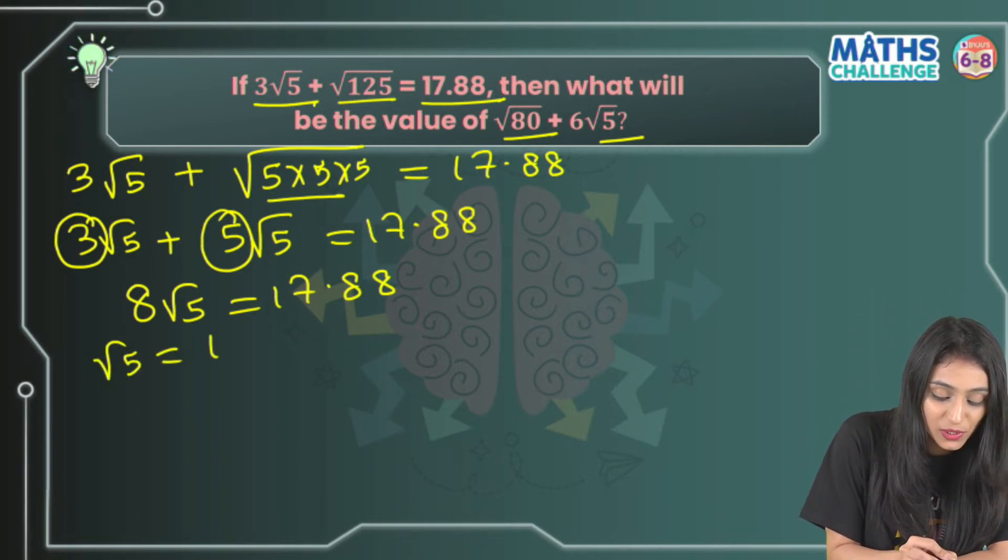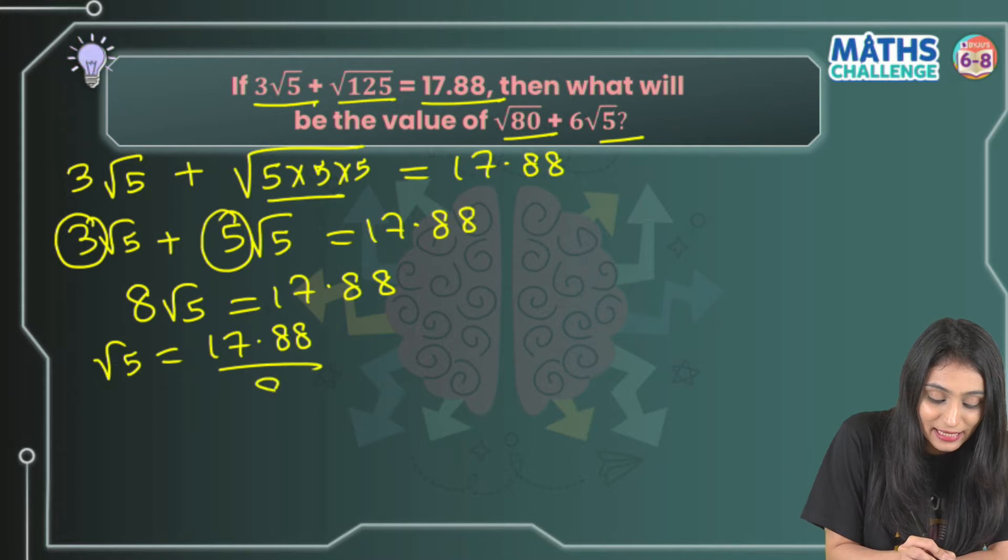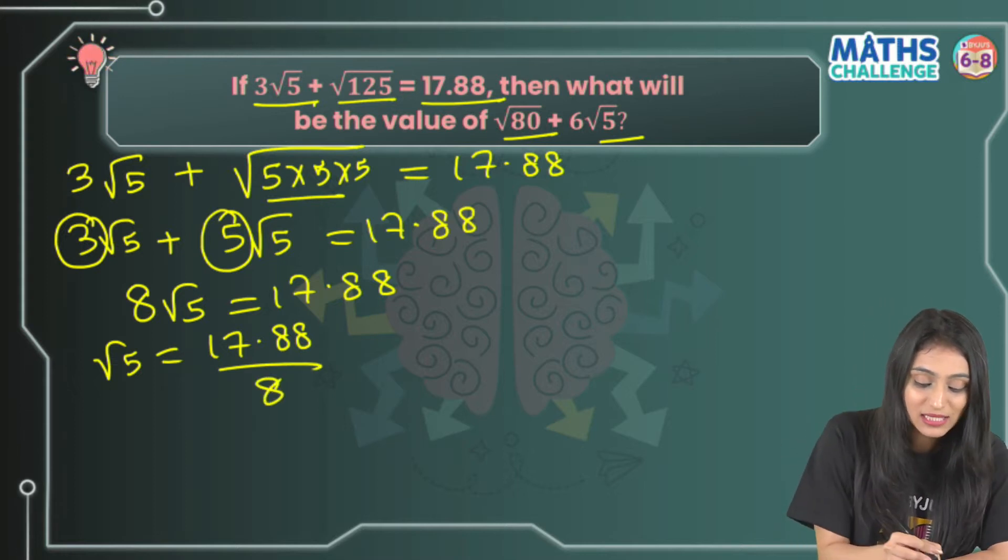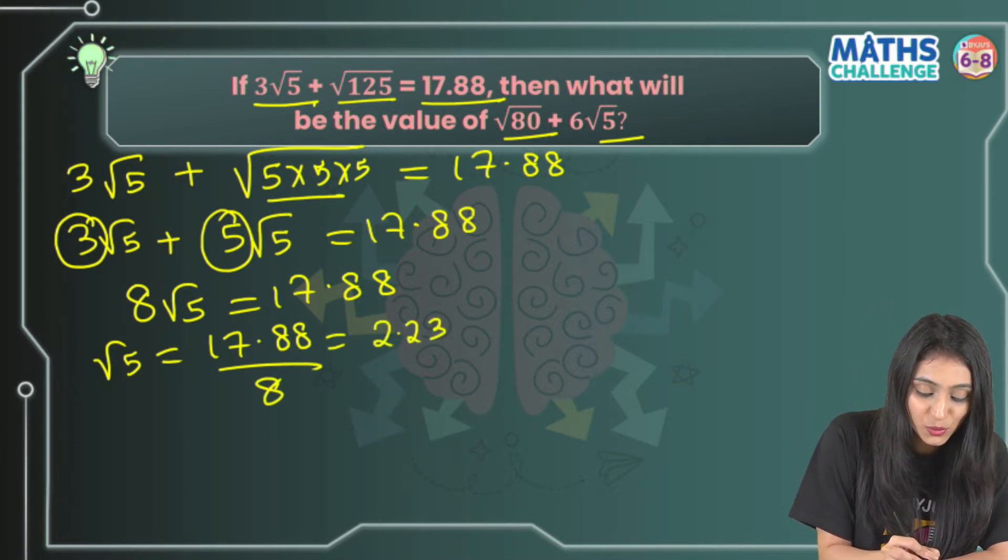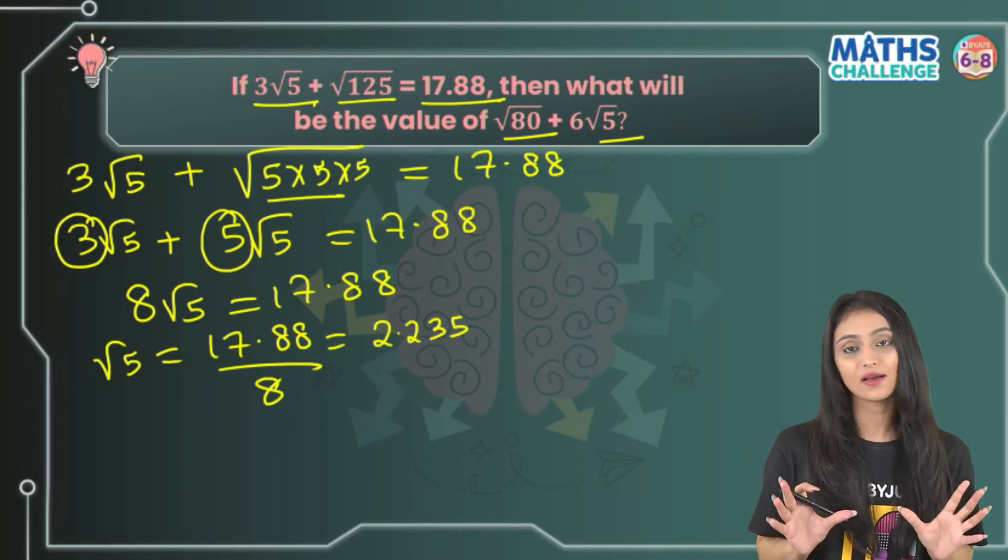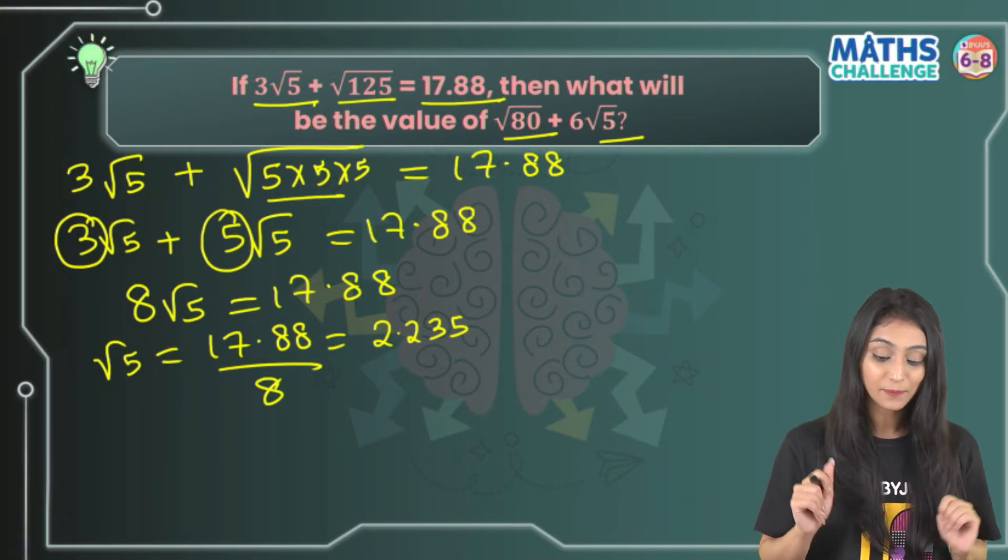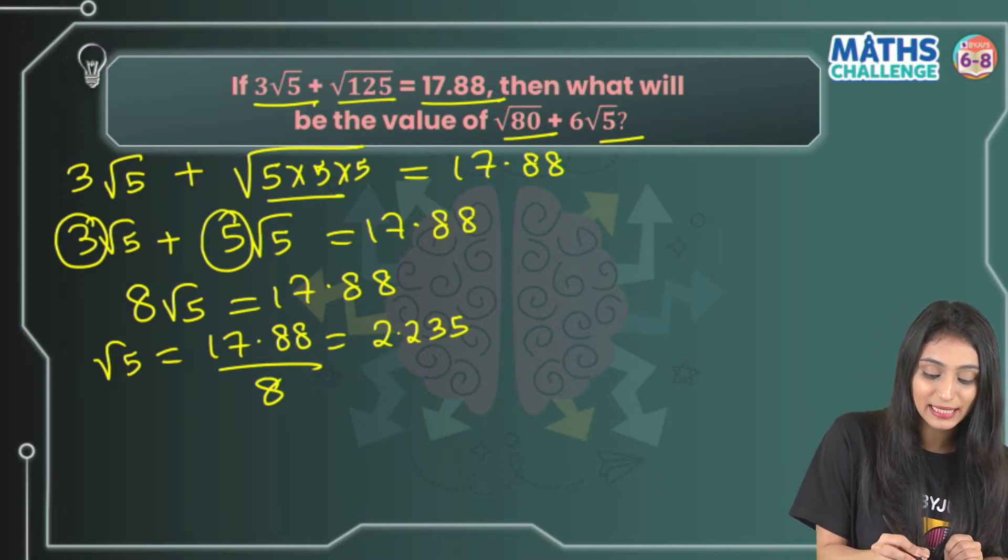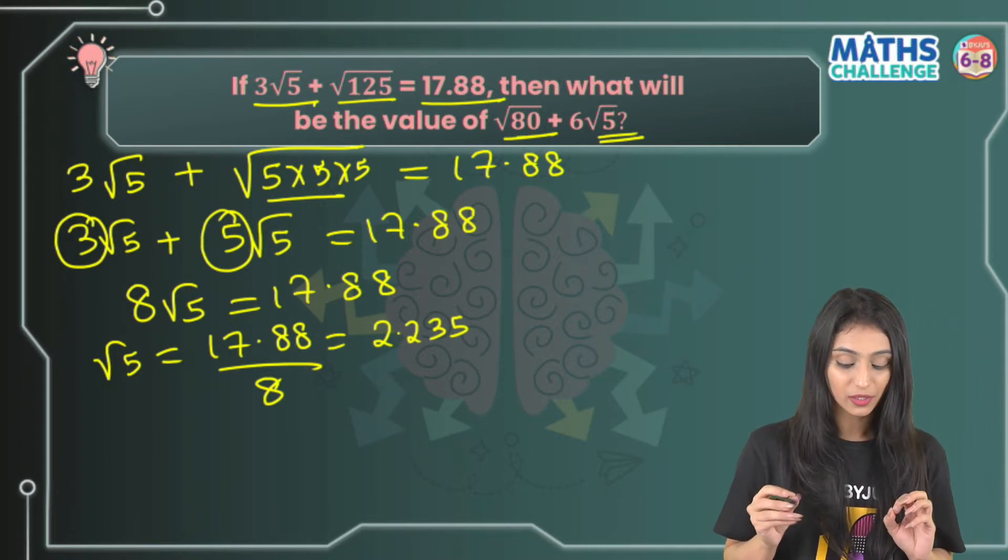That means √5 = 17.88/8. On simplifying this you get 2.235. So we've got the value of √5 from here. Now we can put this value into our target expression, but first we have to simplify √80.